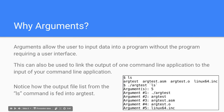So the next question you may have is: why do we have arguments? What's the point of them? Arguments allow the user to input data into a program without the program requiring a user interface. You don't need to code a user interface within the program, because you can just have the user pass the arguments as command line arguments, and the program will take those and work with them.